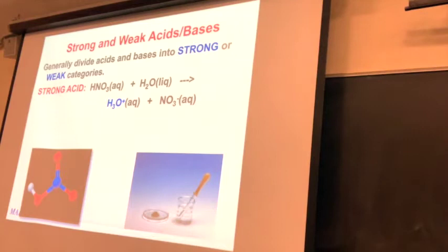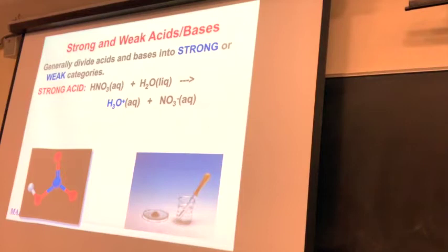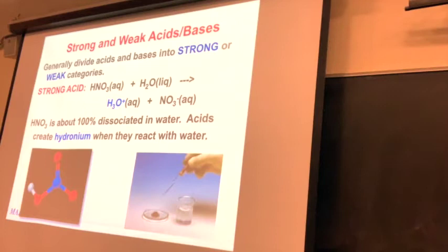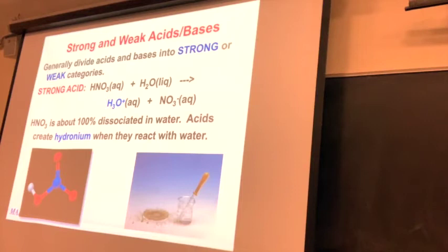Strong acids dissociate 100% into hydronium ion, H3O+. Nitric acid is one of the strongest acids — it reacts with water to make hydronium and nitrate. For strong acids, we use the single-directional arrow, and it's assumed that all reactants go to products. When a few drops of water are added to solid calcium hydride, a violent reaction occurs that produces hydrogen gas.